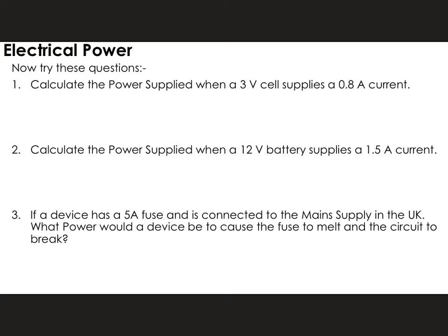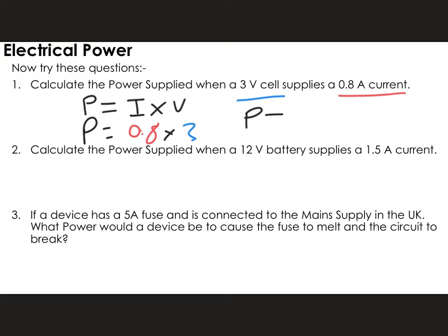To start, I'm going to write down the equation: P is equal to I times V. Looking at the first question, it says calculate the power supplied when a 3 volt cell supplies a 0.8 amp current. So 0.8 amps is my current and I have a 3 volt cell. Power is equal to 0.8 multiplied by 3, which gives an answer of 2.4 watts. We get three marks here: one for substituting in, one for the correct answer of 2.4, and one for the correct units of watts.